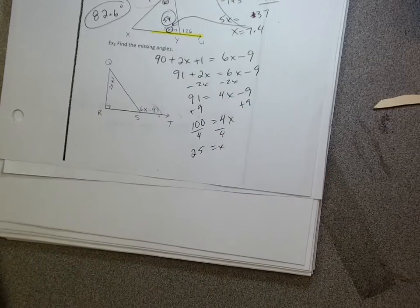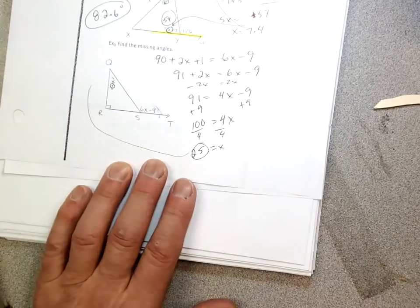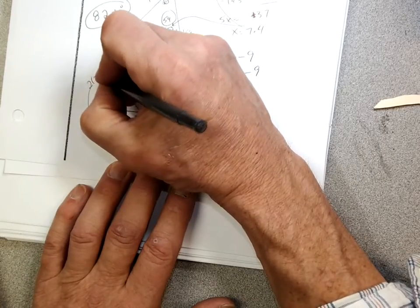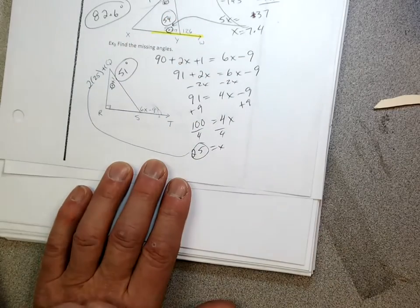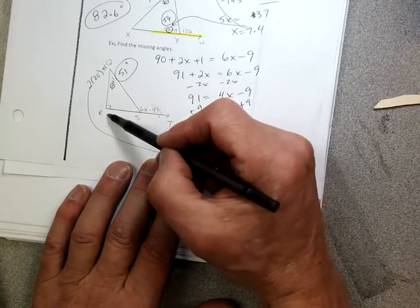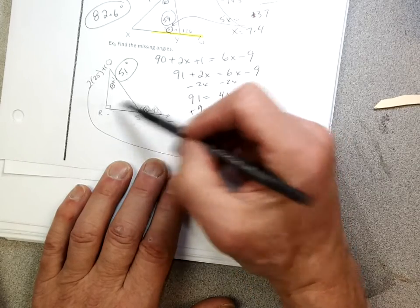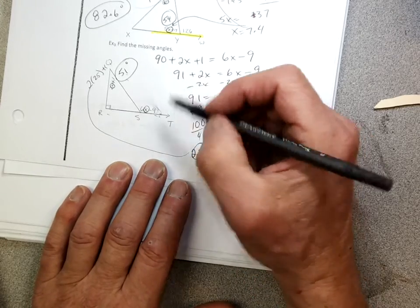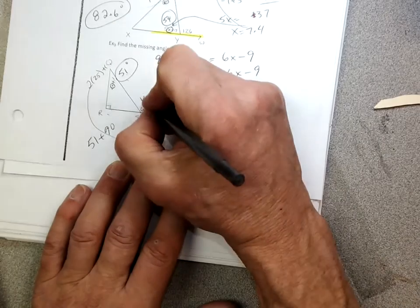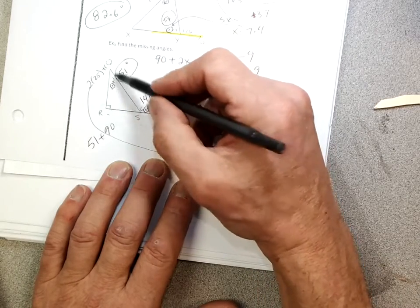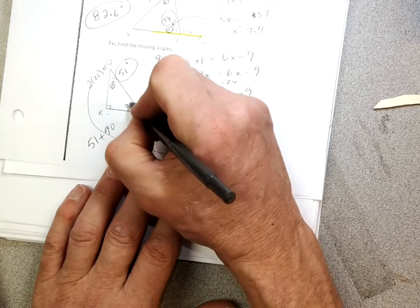But that's not the answer, right? Got to plug it in. So if 25 is the answer, let's plug it in right there. Well, 2 times 25 is 50 plus 1. This angle is 51 degrees, right? And 51 plus 90 has to equal this angle. I can plug it in. I can put 25 in here. But I do know 51 plus 90 has to add up to that angle. So I'm just going to do it that way. It's easier for me. 51 plus 90. Okay, what's that? 141. And I know these two have to add up to 90, right? So if that's 51, that's got to be 39. Got them all.